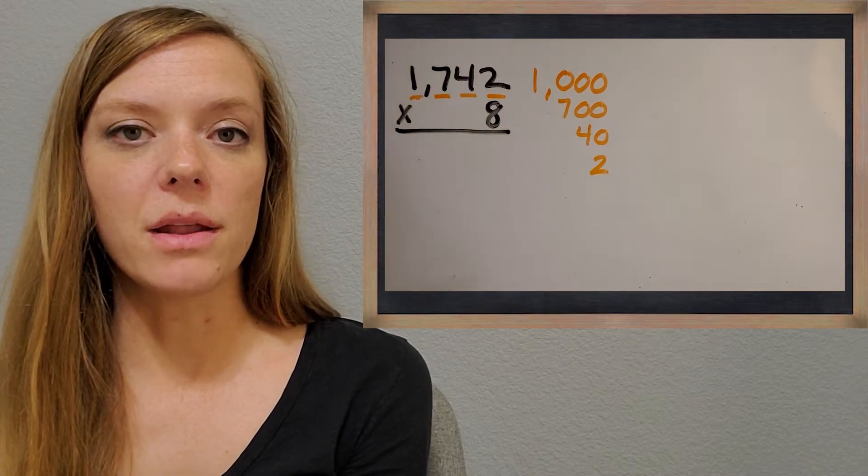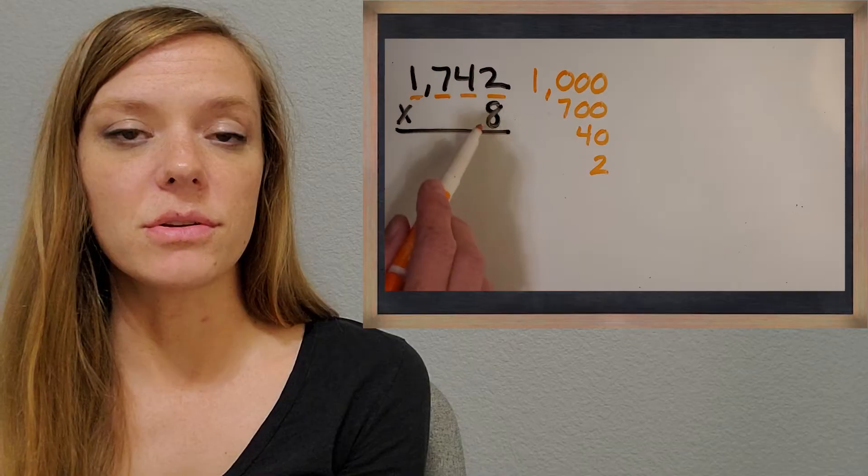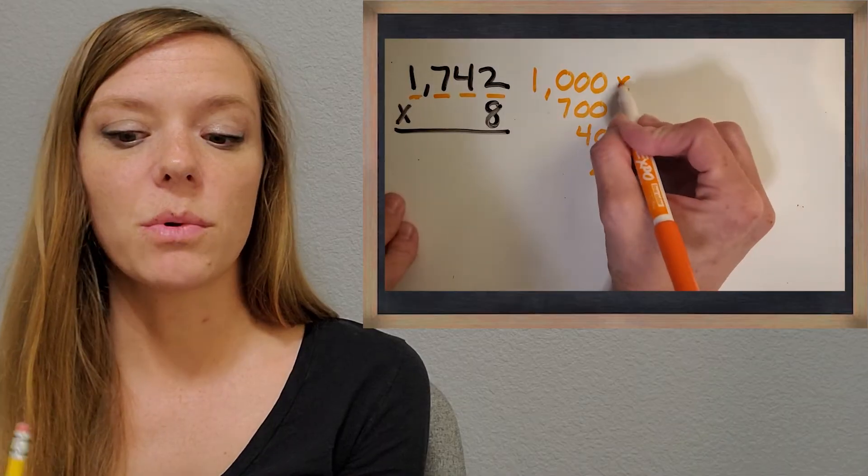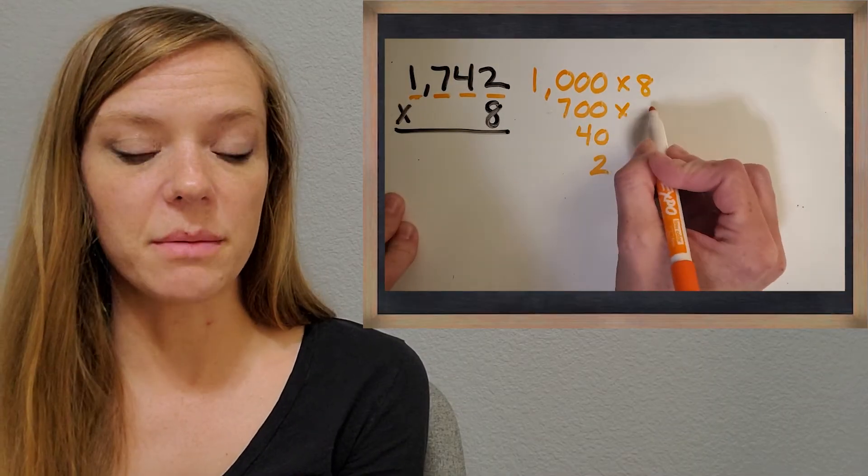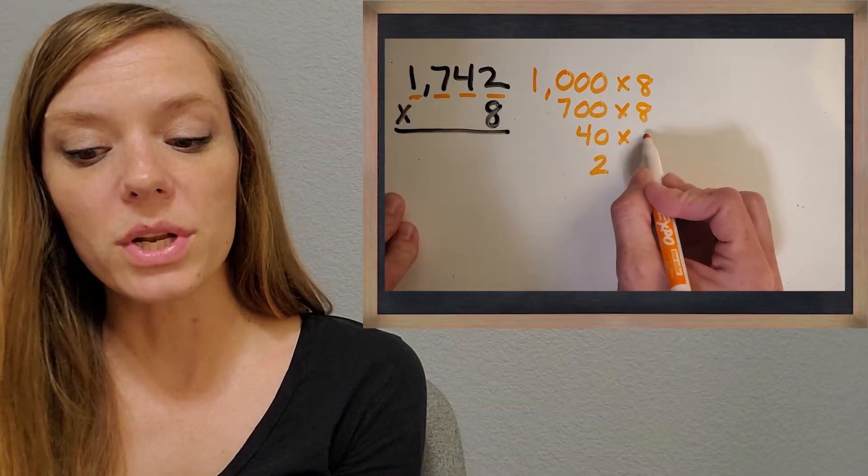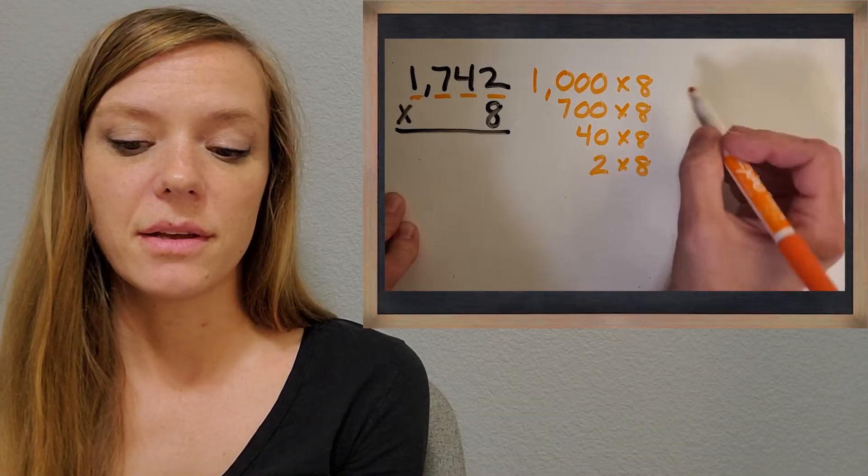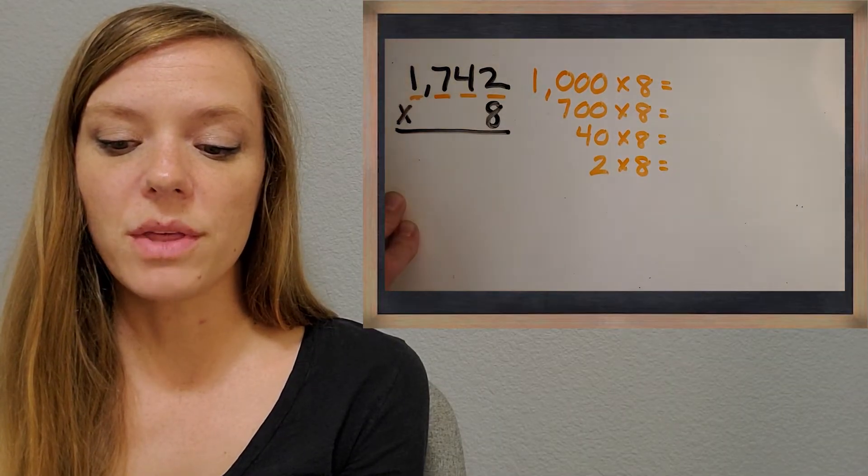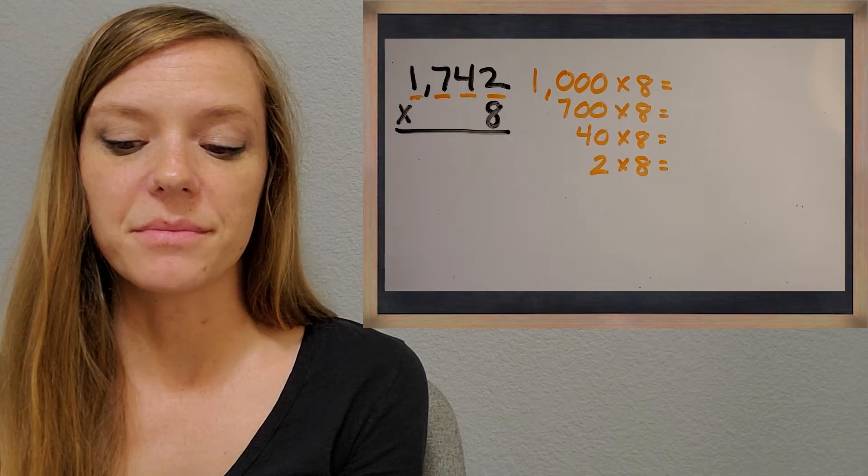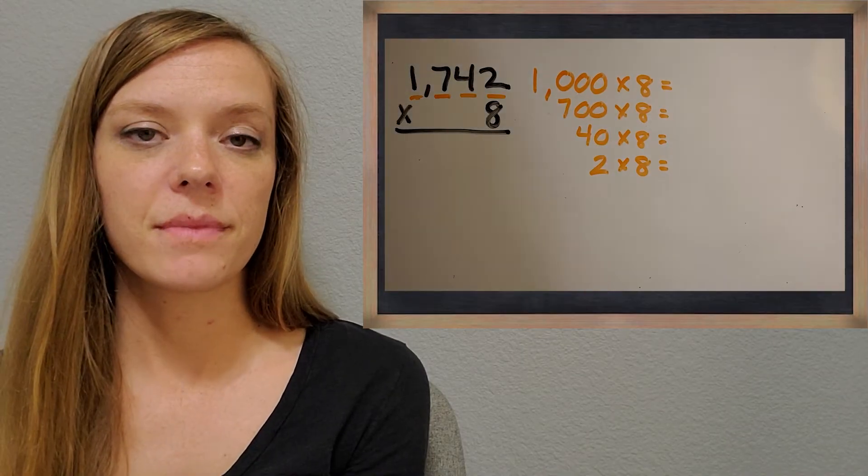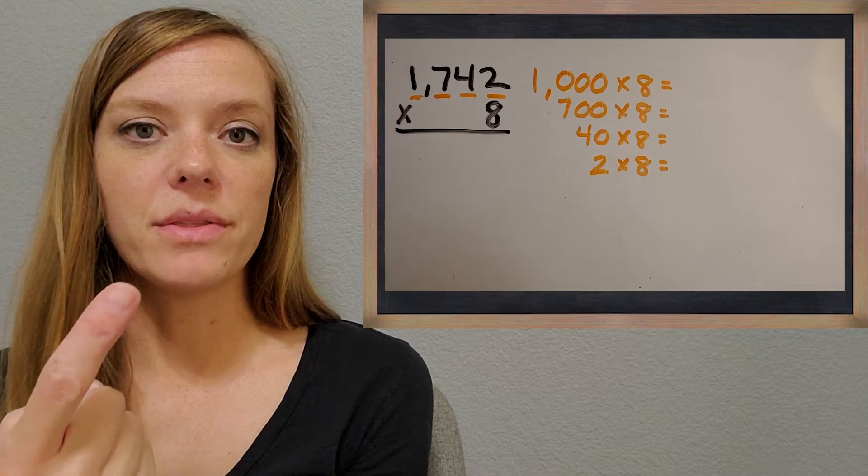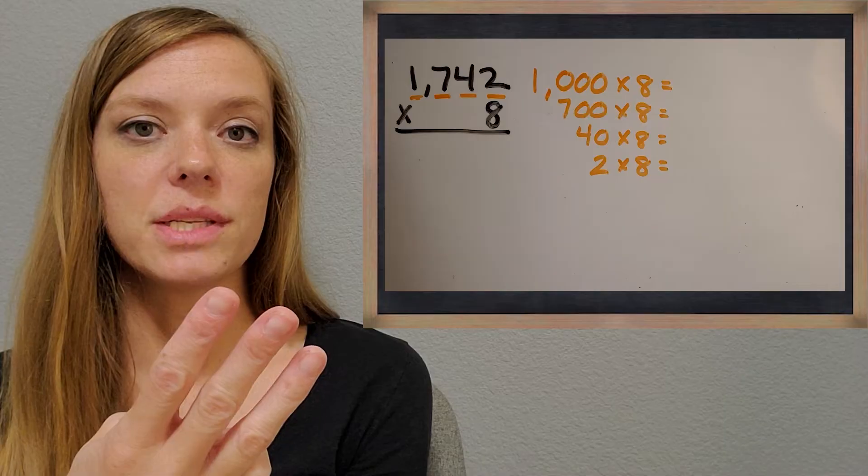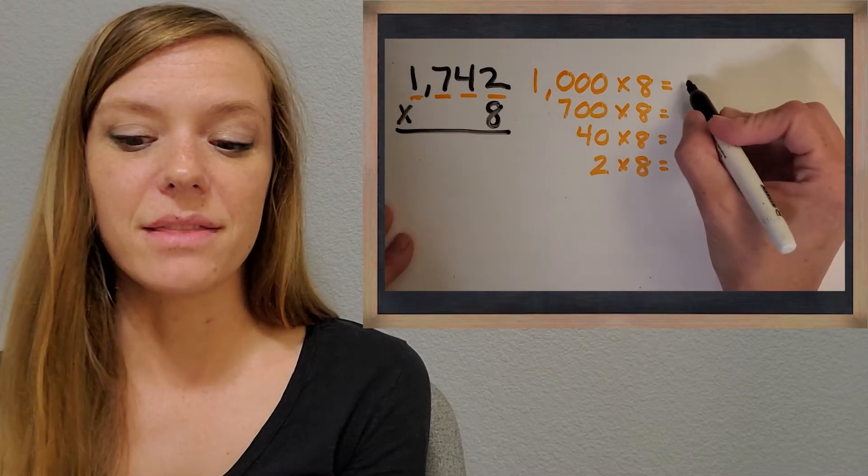Now when we multiply a number by eight, we're really multiplying all those different values times eight. So we're going to do one thousand times eight, 700 times eight, 40 times eight, two times eight. And so now let's work out all of those problems. So what do you think about 1,000 times eight? You can think about 1,000, 2,000, 3,000, and you'll start noticing a pattern there. So you got it, 8,000.